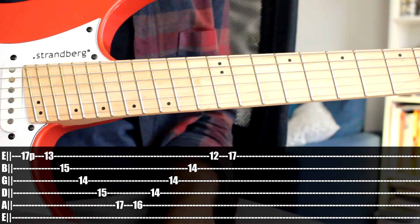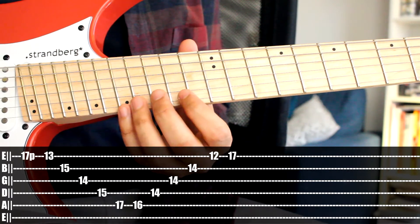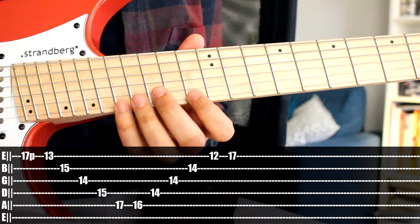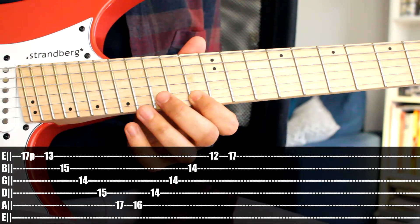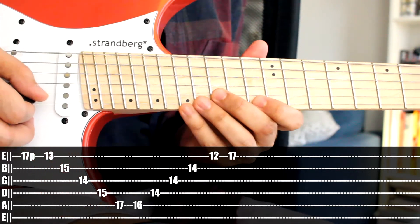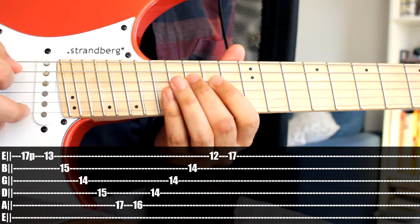Alright, we're going to start off on the high E, a pretty standard picking pattern going from the high E to the low A. We're going to pull off from 17 to 13, then sweep upwards with the right hand: 15, 14, 15, and 17.